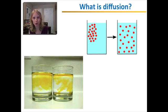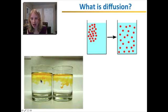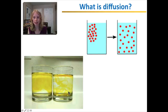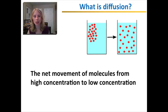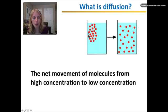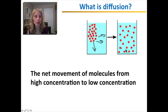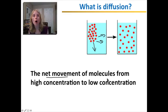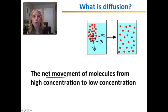Now let's look at what actually is diffusion. Diffusion is the net movement of molecules from high concentration to low concentration. Here the molecules are highly concentrated and they will move towards where there's fewer of them until gradually they are diffused throughout the water. When I say net movement, I mean the overall direction of movement. These molecules are just bouncing around randomly — they can go in any direction, they can even move towards high concentration — but overall, the majority of them are moving towards lower concentration. So the overall direction of movement is from high to low.